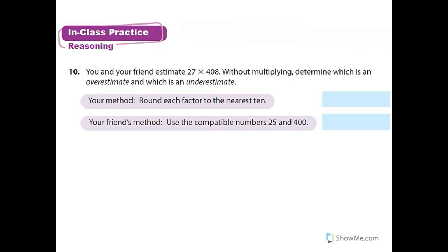Moving along to number 10. You and your friend estimate 27 times 408. Without multiplying, determine which is an overestimate and which is an underestimate. Rounding each one to the nearest 10 gives 30 and 410, so that would be an overestimate because both are over. Your friend's method uses compatible numbers 25 and 400 — 25 is less than 27 and 400 is less than 408, so that's an underestimate.